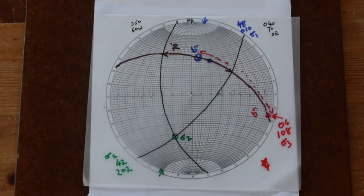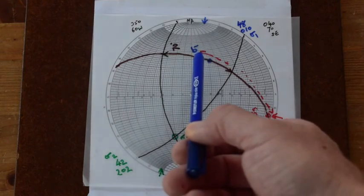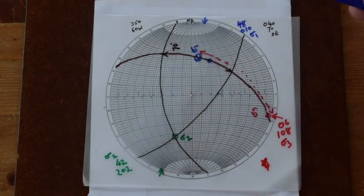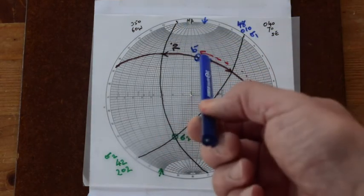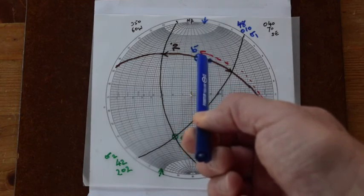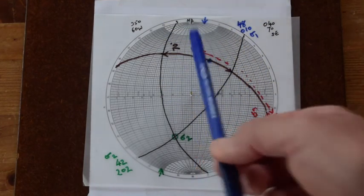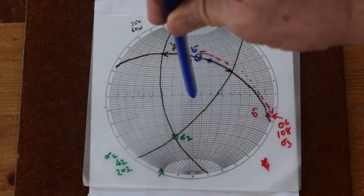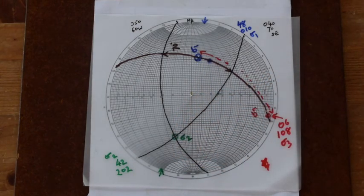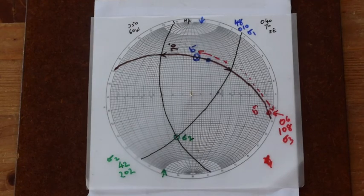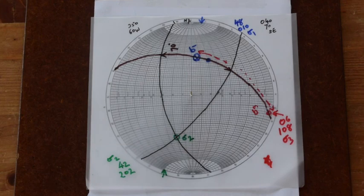Sigma 1, the maximum compressive stress, plunges down approximately towards the north at 48 degrees — about halfway from the edge to the centre of the stereonet. Perfect normal faulting would require Sigma 1 to be vertical, but since it's about halfway to the edge, these are oblique-slip normal faults. Plotting conjugate faults on a stereonet is a quick and really useful way of finding the orientations of the principal stress axes — much easier than working with pieces of cardboard.